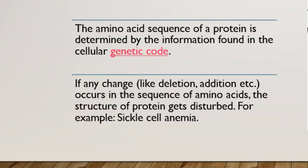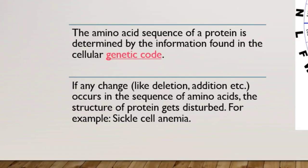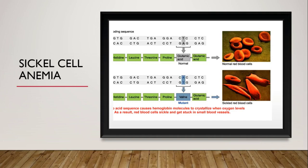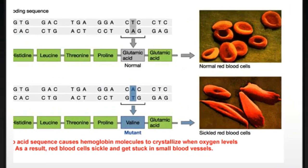جس کی وجہ سے proteins کا structure disturb ہو جاتا ہے، اور یہ mutated protein اپنے normal functions perform نہیں کرتی — rather it causes different types of diseases. اسی طرح کی ایک disease ہے sickle cell anemia. Sickle cell anemia ایک ایسی disease ہے جس کے اندر protein hemoglobin کا structure change ہو جاتا ہے. Hemoglobin is actually a transport protein جو کہ act کرتی ہے as an oxygen carrier from lungs to all parts of the body.